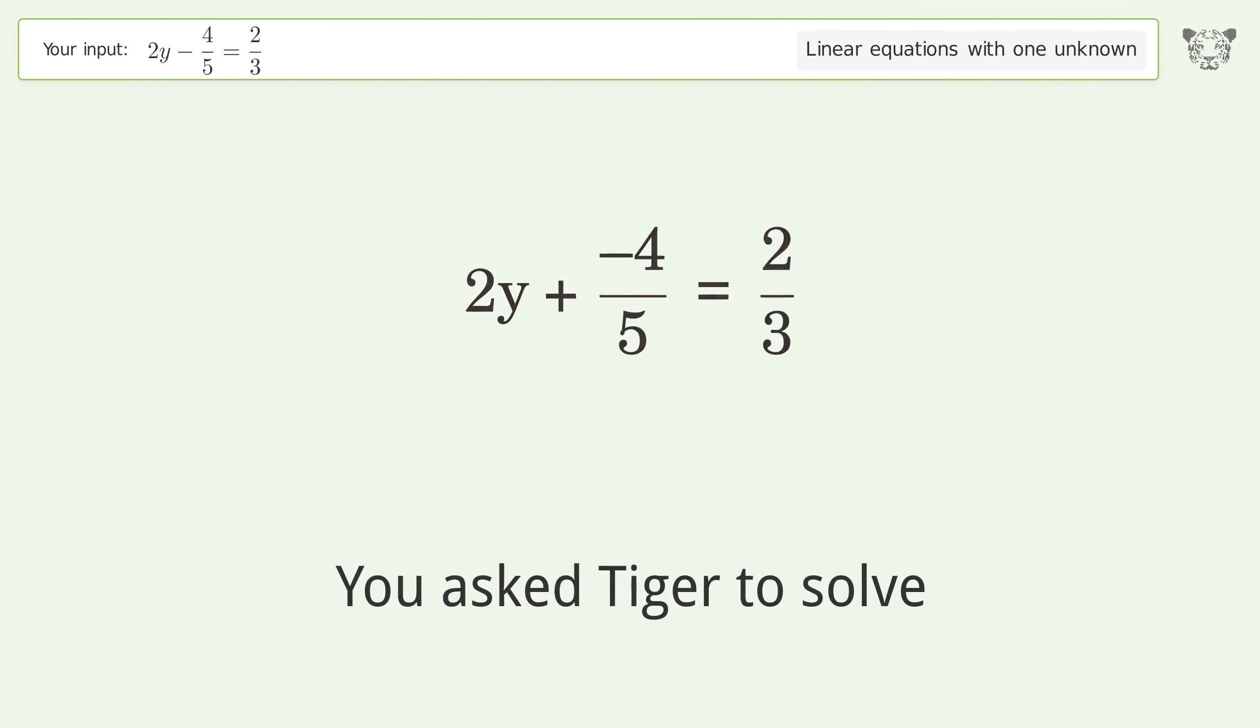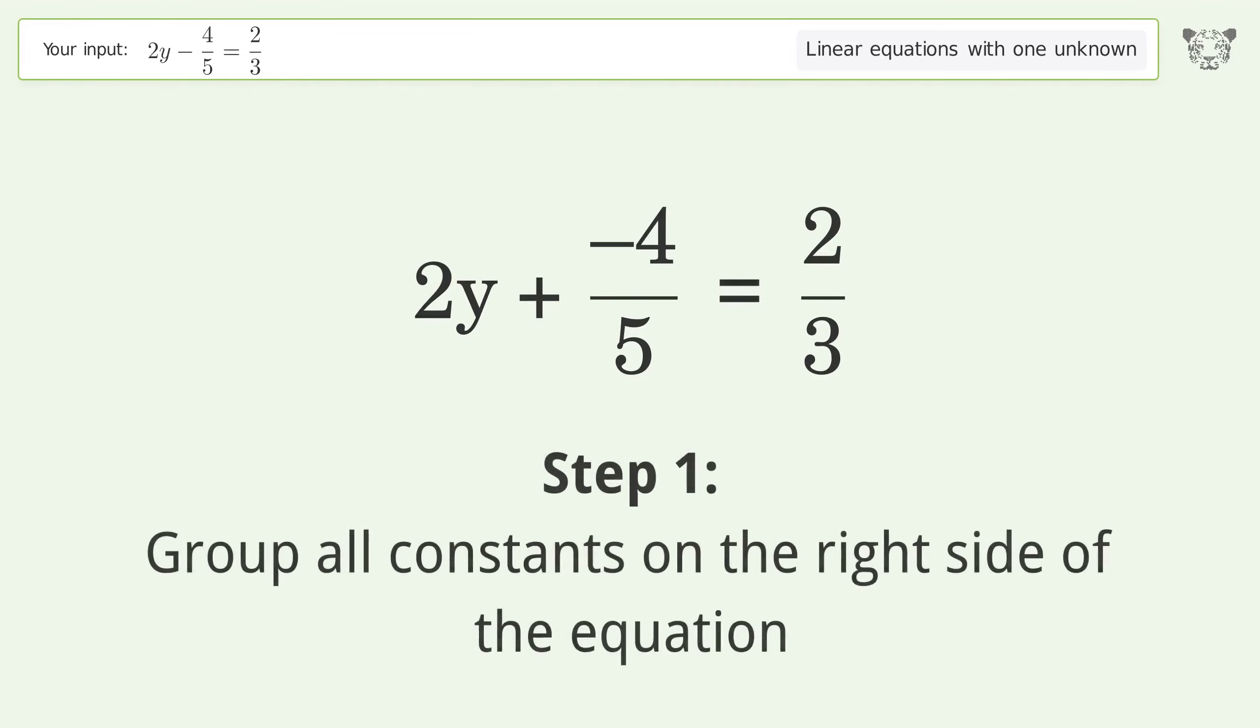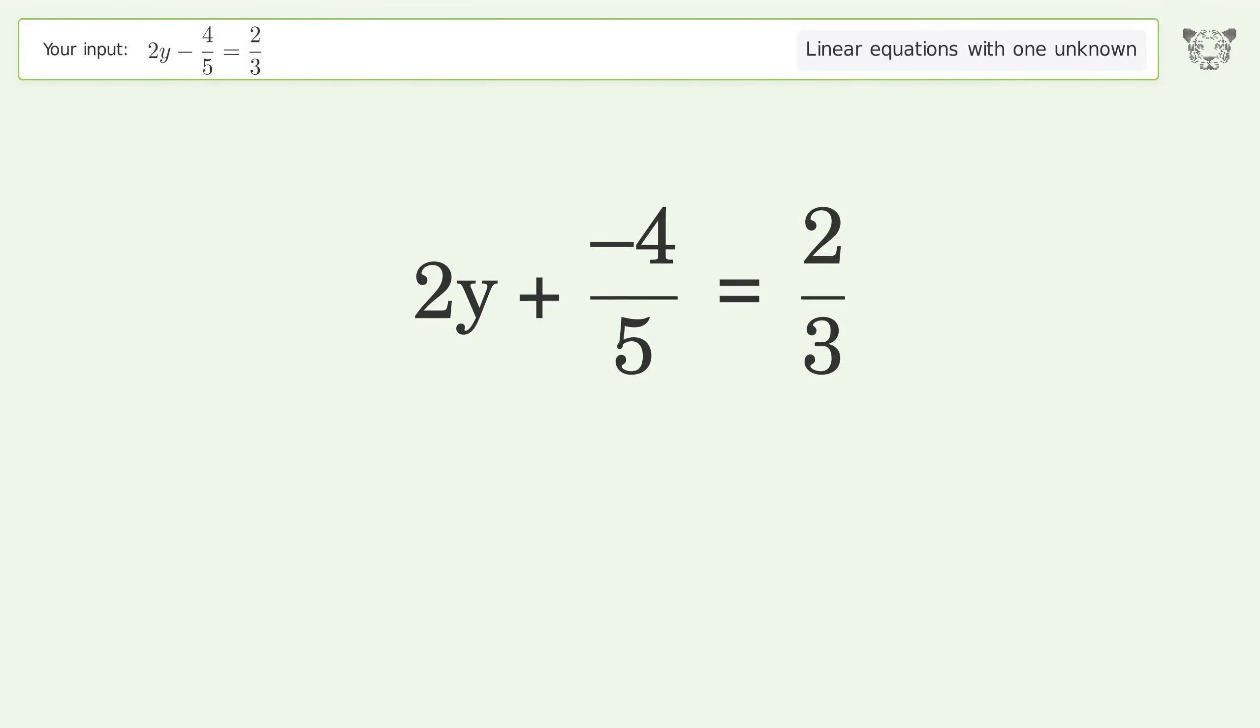You asked Tiger to solve this. It deals with linear equations with one unknown. The final result is y equals 11 over 15. Let's solve it step by step. Group all constants on the right side of the equation. Add 4 over 5 to both sides.